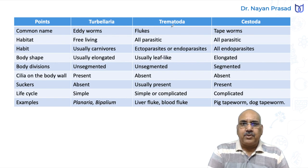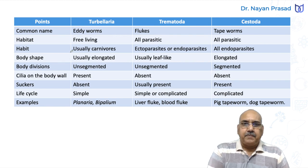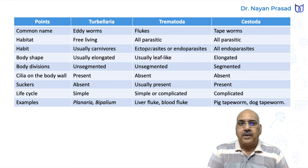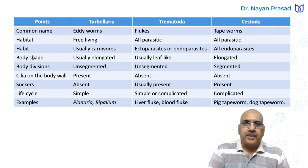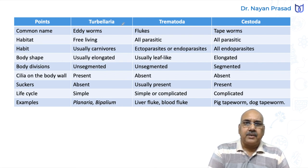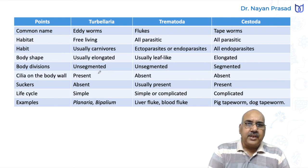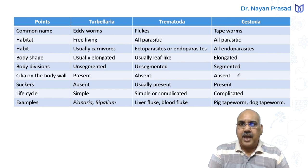Comparing with Trematoda - common name: flukes; all parasitic. Cestoda - all parasitic, common name: tapeworms. Body shape: Turbellaria usually elongated; Trematoda usually leaf-like; Cestoda elongated again. Body divisions: Turbellaria unsegmented; Trematoda unsegmented; but in Cestoda the body is segmented, meaning divided.